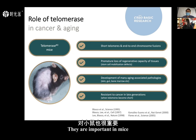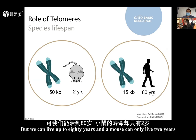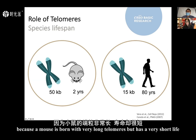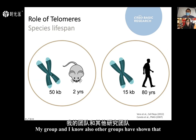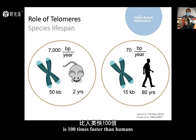There was something interesting: humans are born with very short telomeres compared to mice. Mice are born with longer telomeres than humans, but we can live up to 80 years while a mouse only lives two years. Some people thought this meant telomeres are not determining aging. However, my group and others have shown that it is not the initial telomere length that is important, but the rate of telomere shortening. We found that mice shorten their telomeres a hundred times faster than humans.